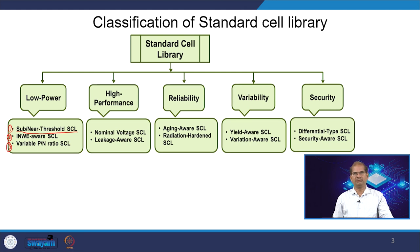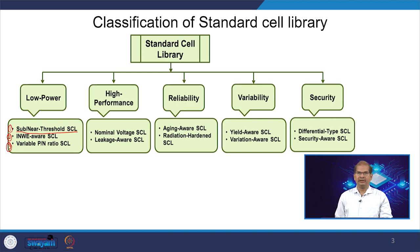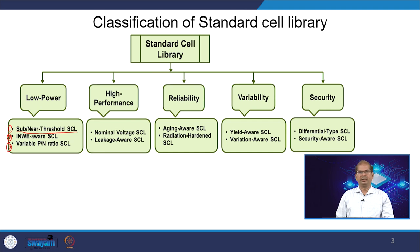For high performance applications like servers or workstations where power dissipation is less of a concern, we use a low threshold voltage, nominal voltage standard cell library, or a leakage-aware standard cell library. Reliability is also important — it relates to how device performance behaves after 10 years and how the transistor threshold voltage degrades with time. Just as humans age, ICs also age, so we need reliability-aware or aging-aware standard cell libraries.